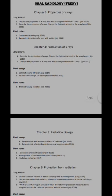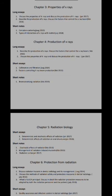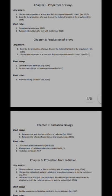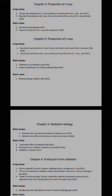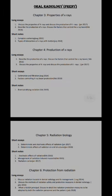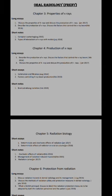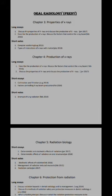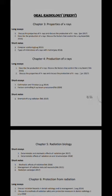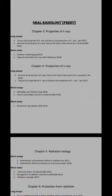For short notes, Compton scattering and types of interaction of X-rays with matter are almost the same topic. There are three types: Compton scattering, Coherent scattering, and photoelectric absorption. The first question asks about just Compton scattering specifically, while the second asks about all three types. Draw a picture of the interaction and explain it. For Compton scattering, mention its contribution to the final image — whether it diminishes image quality or contributes positively.